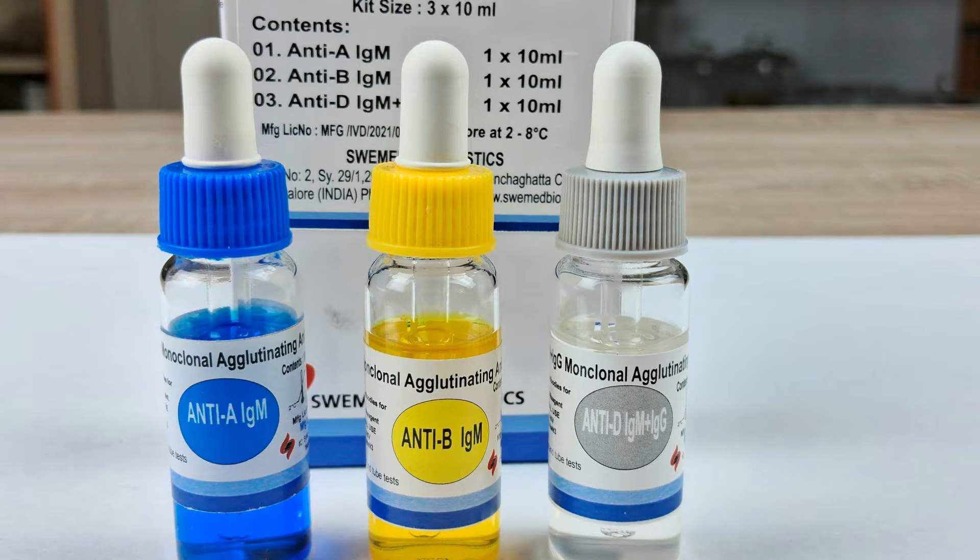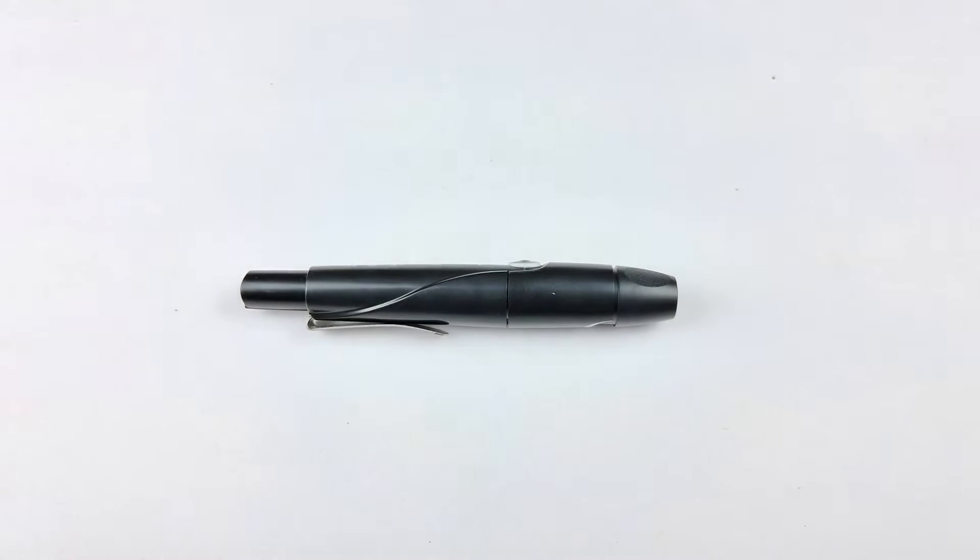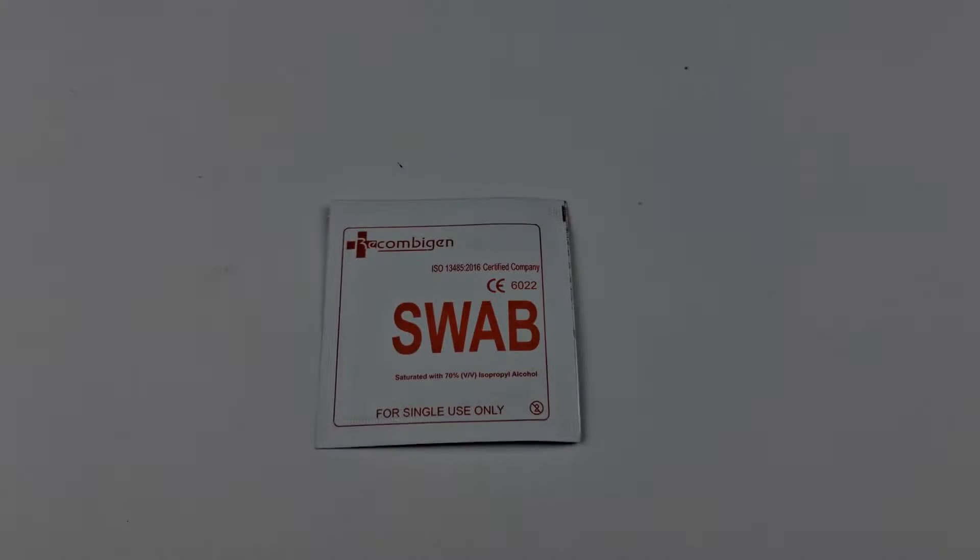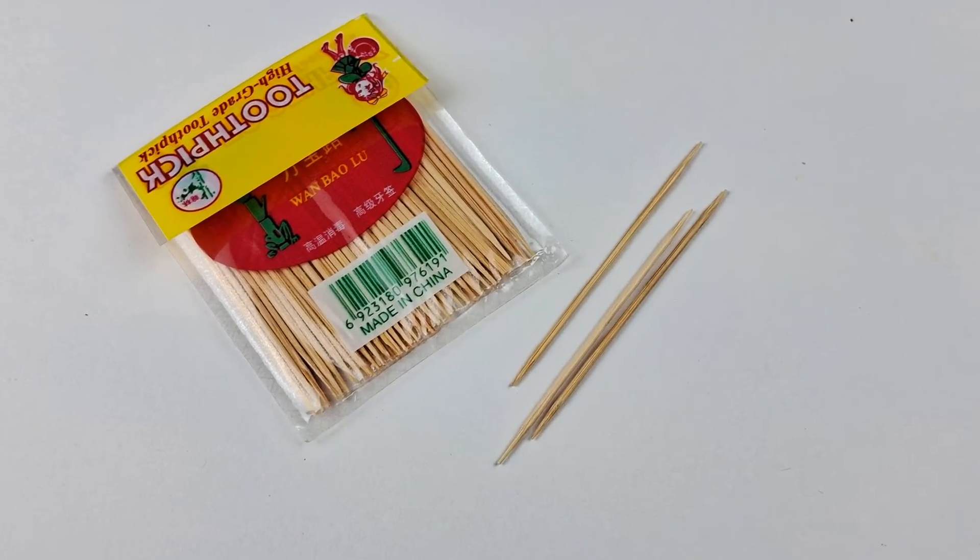To perform the ABO and RH blood grouping test, you'll need the following: a clean glass slide or a white porcelain tile or a VDRL test plate, a pricking device such as a lancet or pricking pen, an alcohol swab or a cotton moistened with rubbing alcohol, and toothpicks, match sticks or capillary tubes.